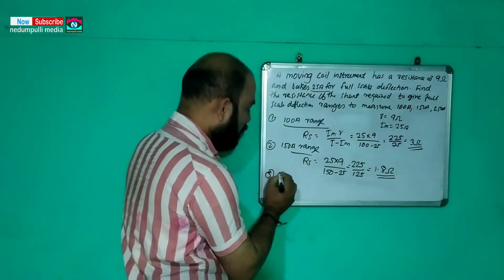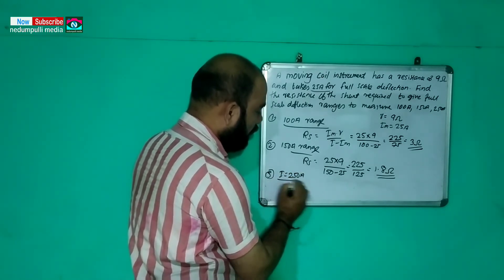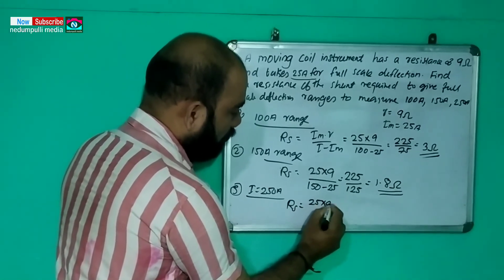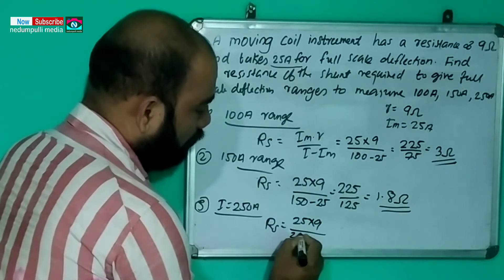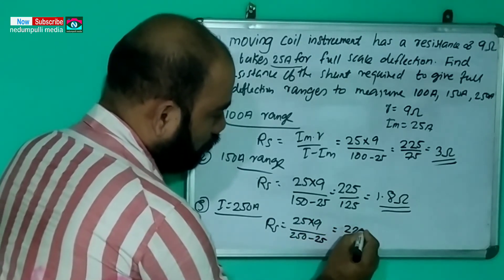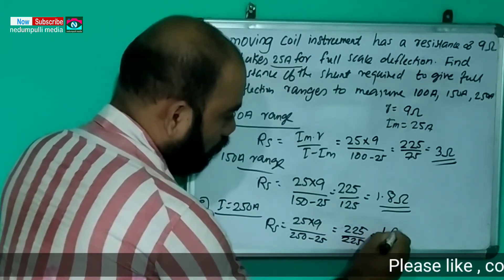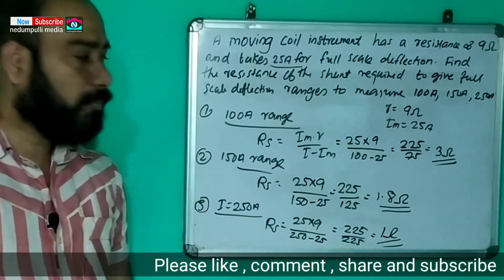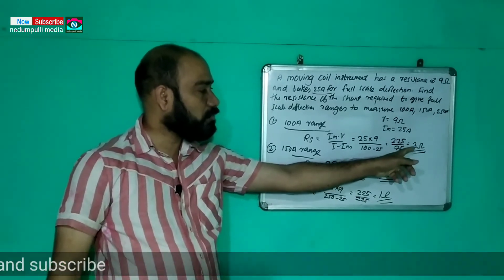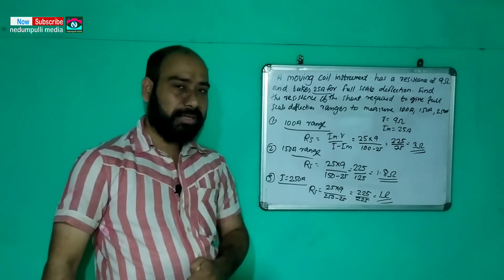For the 250 ampere range: Rs is equal to 25 into 9 divided by 250 minus 25, which equals 225 divided by 225, equal to 1 ohm. So the three answers are 3 ohms, 1.82 ohms, and 1.0 ohm.